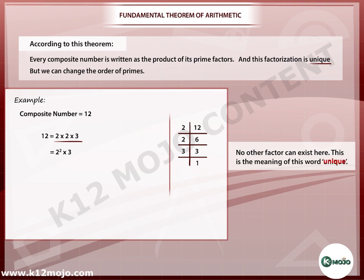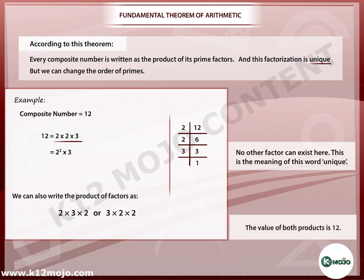This is the meaning of this word unique. We can also write the product factors as 2 into 3 into 2 or 3 into 2 into 2. The value of both products is 12. This is the fundamental theorem of arithmetic.